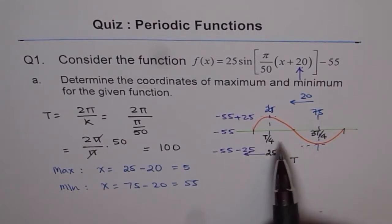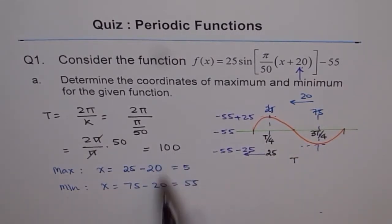You would also get it by adding half the time period. Time period is 100, half the time period is 50, 50 plus 5 is 55. So that also gives us the location of maximum minimum.